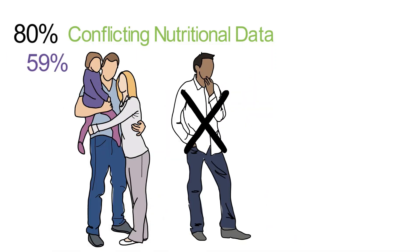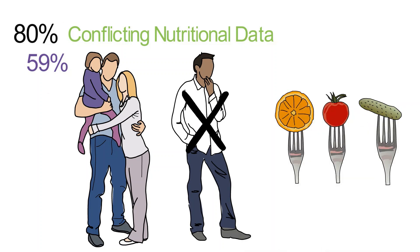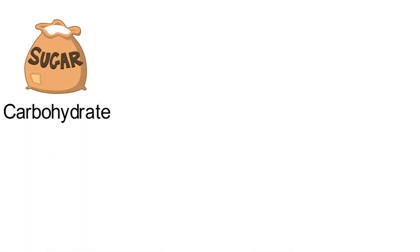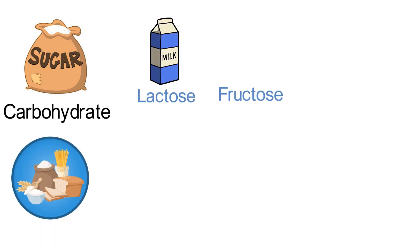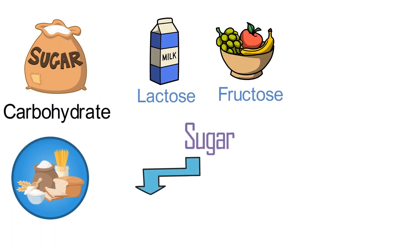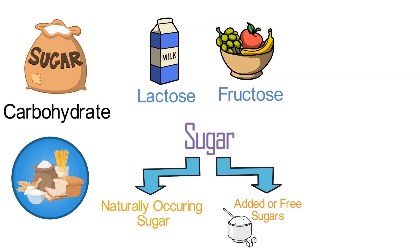What consumers aren't confused about, though, is the need for a healthy change. Sugar is a carbohydrate found naturally in a host of different foods, from lactose in milk to fructose in fruits. There are two types of sugar: naturally occurring sugar, such as those we just mentioned, and added or free sugars that include refined table sugar or sucrose, as well as concentrated sources like syrups.